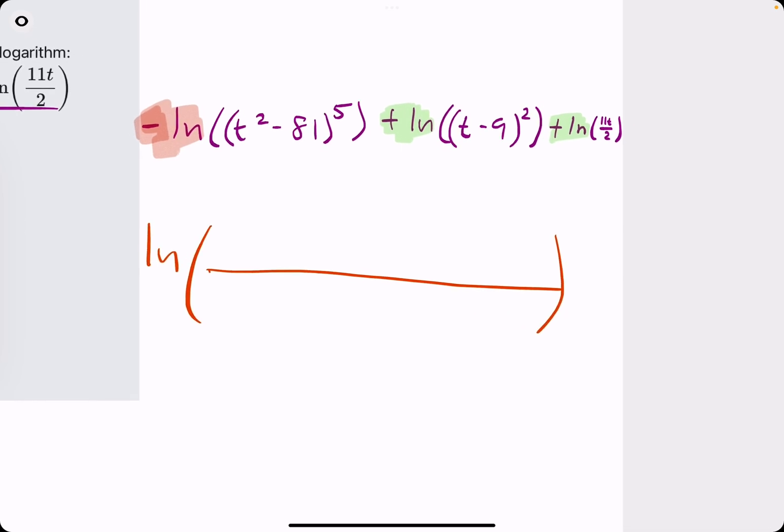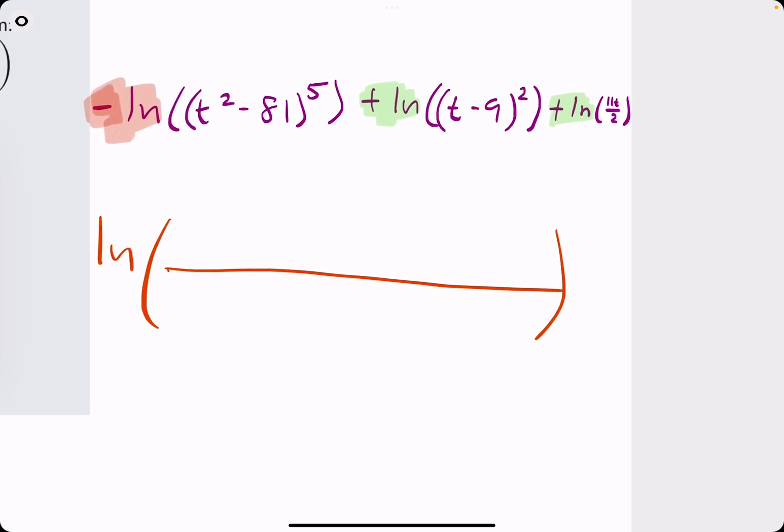we will condense everything into a single natural log. Whichever ln's have the positive in front will tell us what we'll put in the numerator. So we're going to put (t - 9)² in the numerator because it had a positive ln out in front. And then we'll put 11t/2 in the numerator because it had a positive ln.